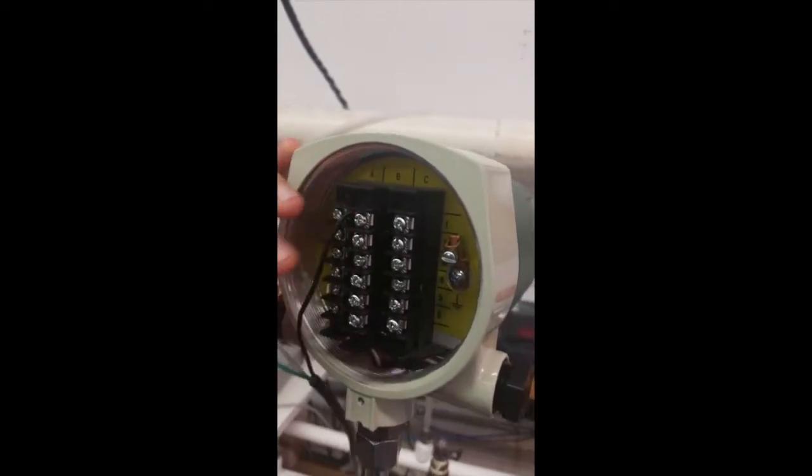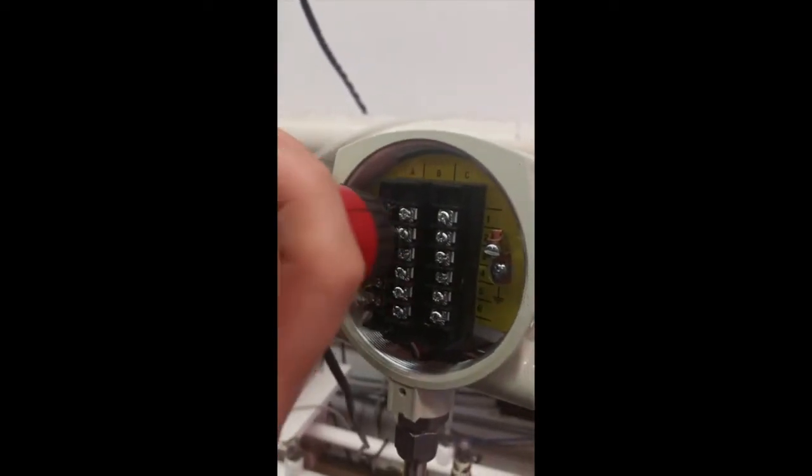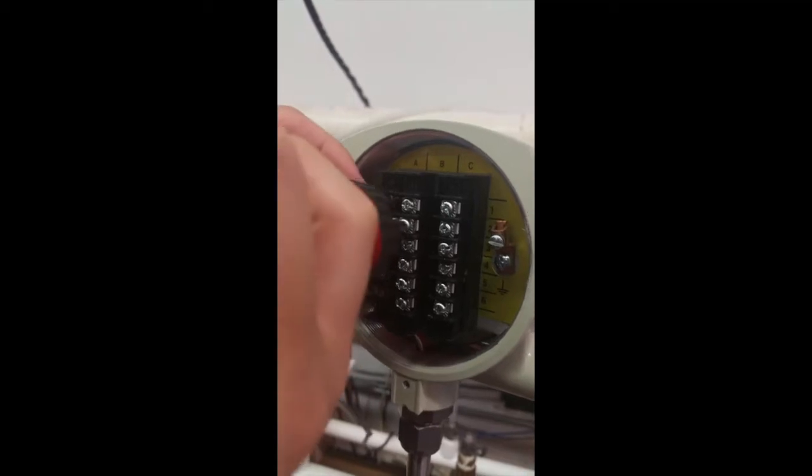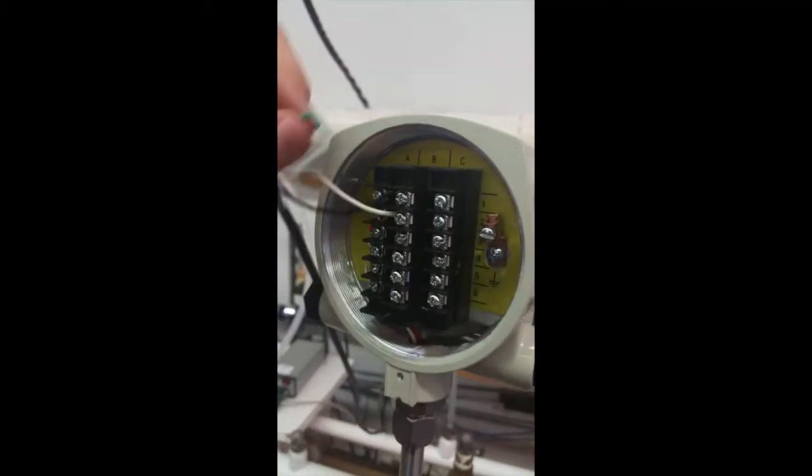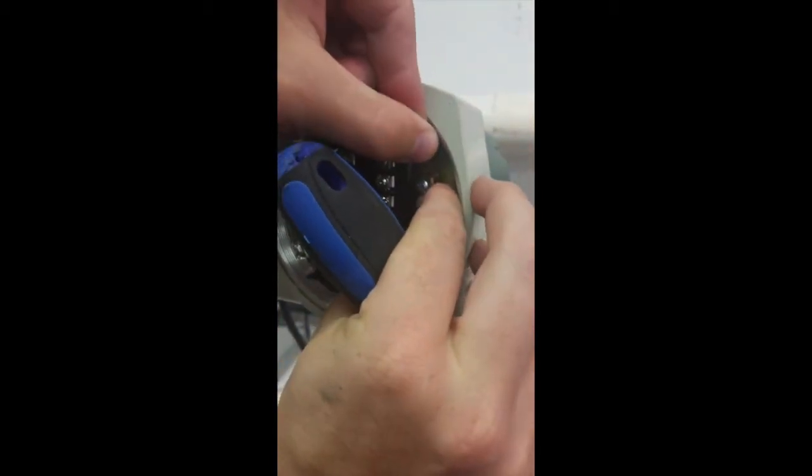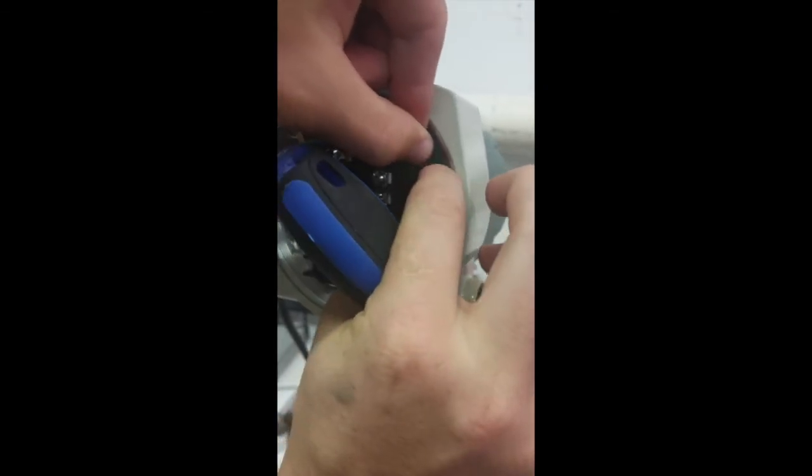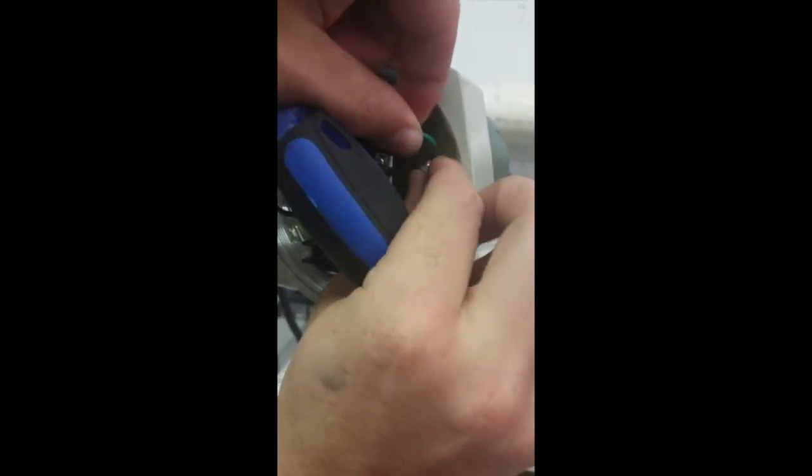First we're going to start by connecting the AC power. Kyle just connected the line wire to B1 and he's connecting the neutral wire to B2. Next he's going to connect the earth ground and this will complete the wiring for the AC power that goes to the meter.